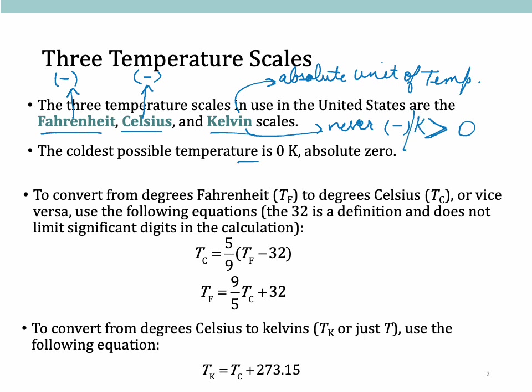The coldest possible temperature is zero Kelvin, which is called absolute zero, because nothing can exist beyond zero Kelvin. It will never go negative. That's why it's called absolute—it's an absolute number, never negative.